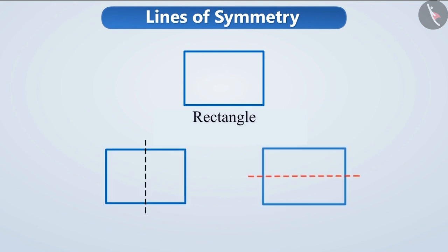Symmetry in a rectangle could be seen by folding it through these two lines. Hence, a rectangle has two lines of symmetry.